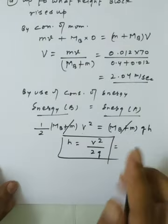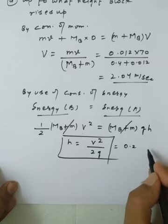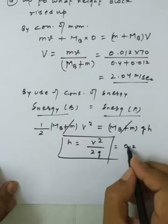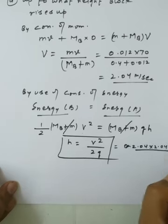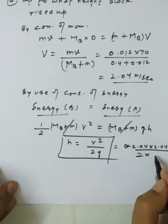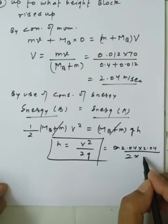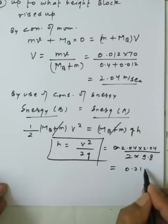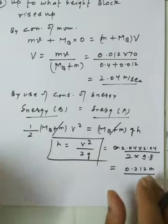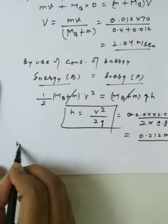Using V = 2.04 m/s and g = 9.8: H = (2.04)² / (2 × 9.8) ≈ 0.212 meters. This is the height to which the block rises, completing part (a).